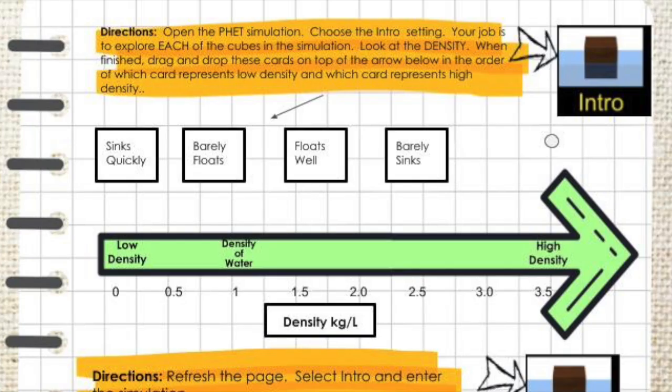While you're doing your investigation, what you want to explore are these note cards. Find out what the density is of an item that sinks quickly. Then drag and drop it somewhere on this green line based on the density of the item that you discovered that sinks quickly.